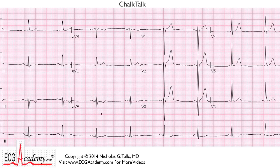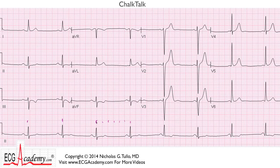Looking down here at the rhythm strip, we can see the rhythm is quite regular. And what's the rate if we count off boxes? 300, 150, 100, 75, 60, 50 — just about 50 beats per minute. In fact, if you see that the QRS is hanging pretty close to the heavy line, so maybe it's like 49 beats per minute.